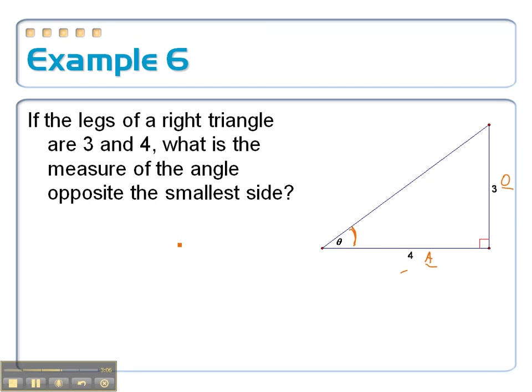Opposite over adjacent, that's the tangent ratio. So tangent of my angle, which is theta, equals the opposite side, 3, over 4, the adjacent side. To solve this for the angle theta,